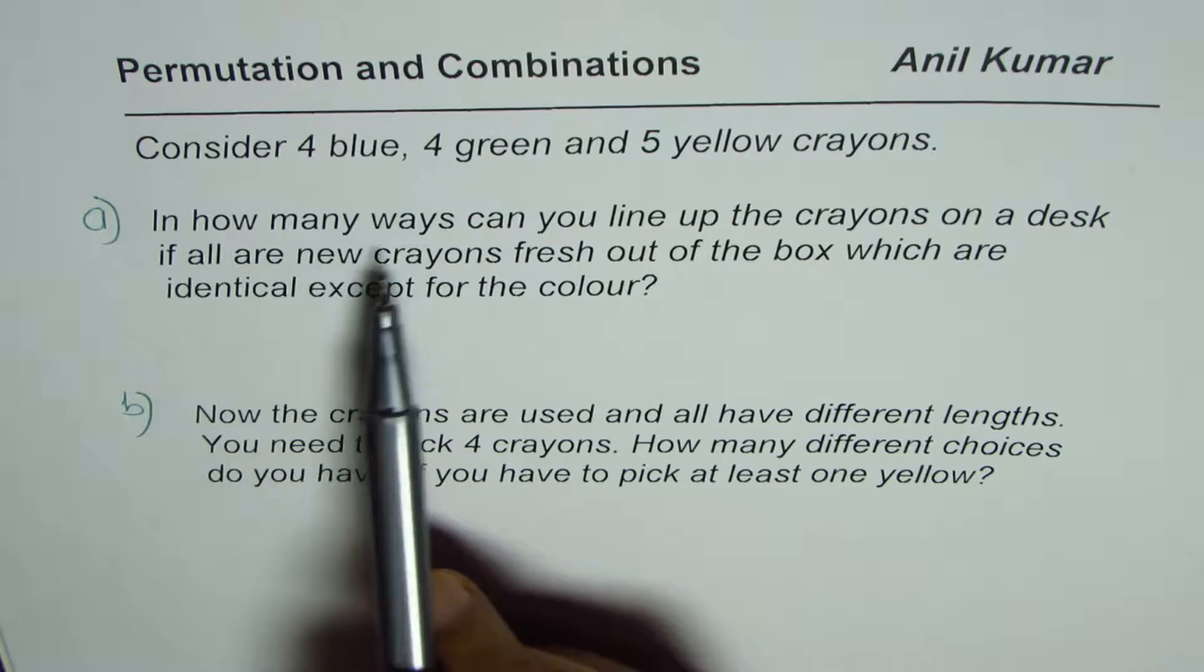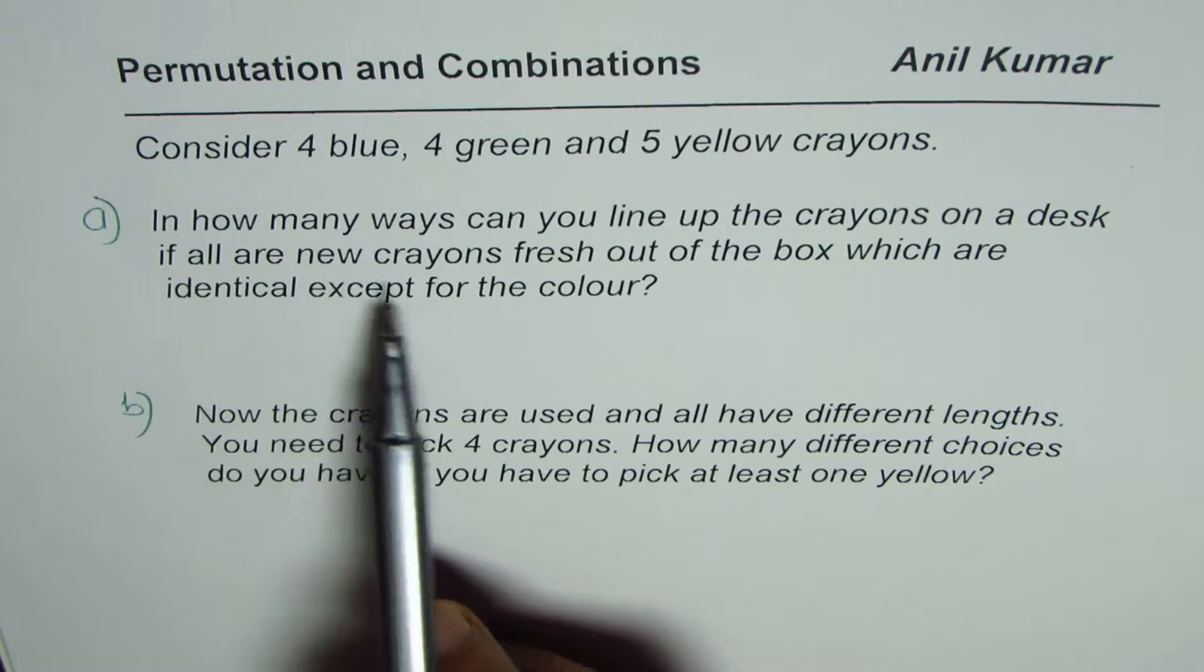Let us consider 4 blue, 4 green and 5 yellow crayons. Case A is, in how many ways can you line up the crayons on a desk if all are new crayons, fresh out of the box, which are identical except for the color?